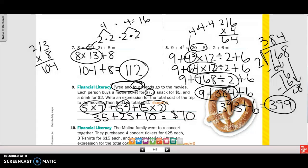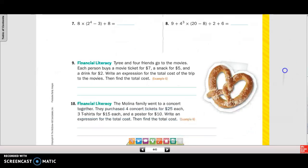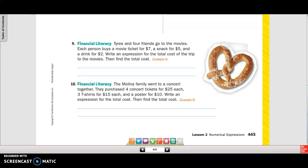Let's do number 10, and then we'll be done with this. The Molina family went to a concert together. They purchased 4 concert tickets for $25 each, 3 t-shirts for $15 each, and a poster for $10. Write an expression. So, there's 4 of them times 25, plus, they got 3 t-shirts, so 3 times 15, plus, they only got one poster, so plus 10. 4 times 25, that's 100. 3 times 15 is 45, and we have our 10. So, the cost is going to be $155.